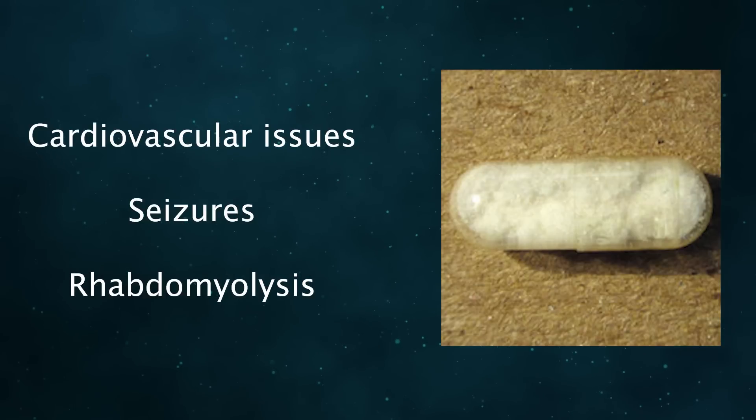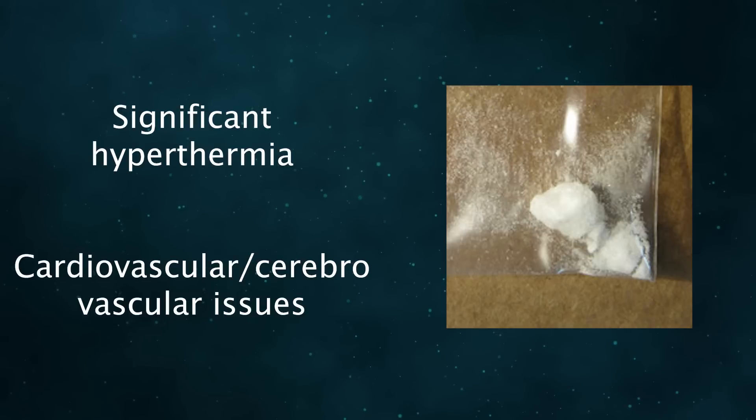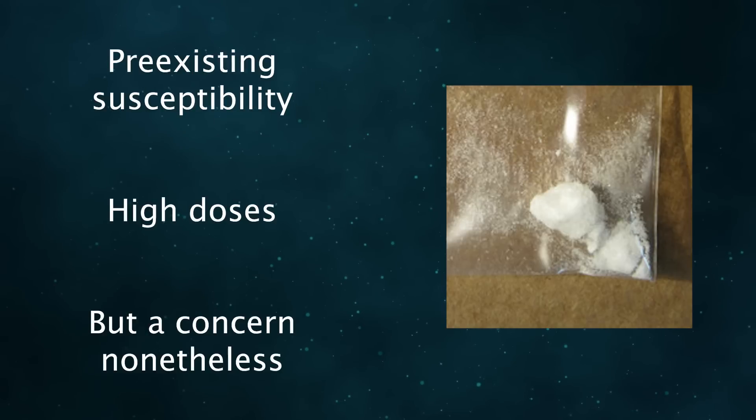If you use too much, cardiovascular issues, seizures, rhabdomyolysis, confusion, agitation, and hyperthermia are possible. We have multiple cases showing significant hyperthermia and cardiovascular or cerebrovascular issues. Some instances of cerebral hemorrhage have been connected to the drug, though it seems likely that those cases came from a pre-existing susceptibility or an unnecessarily high dose.